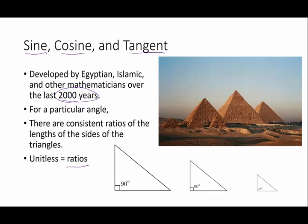Ancient Islamic Egyptian mathematicians have used these in design and architecture for many, many, many, many years. For any particular angle, let's say you've got a 30 degree angle, it doesn't matter if you're talking about a really small triangle or a very large triangle.